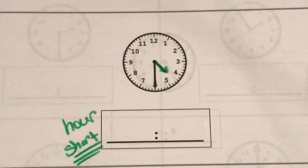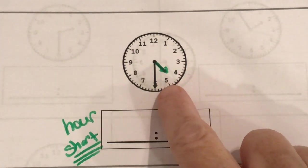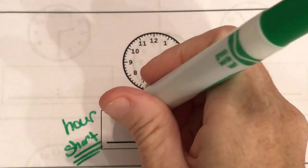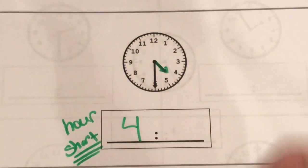Now what do I see about my hour hand? Well it's past the four but it didn't get to the five yet. So it's not five because it didn't reach the five. So our hour hand is going to tell us it's four o'clock.